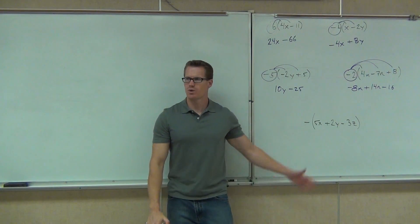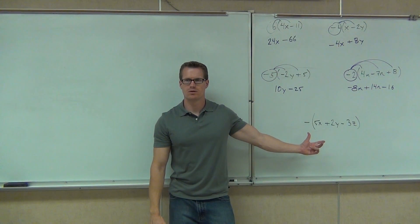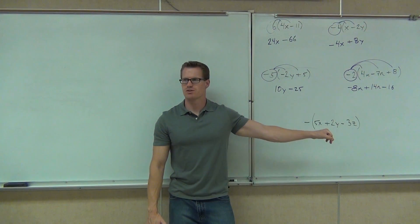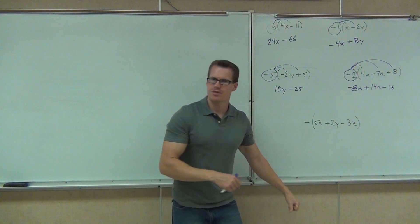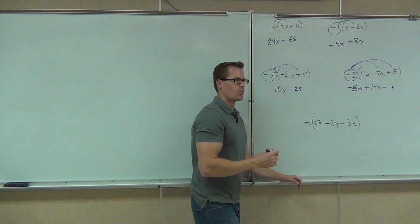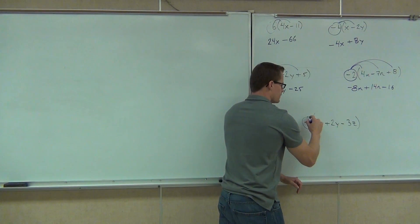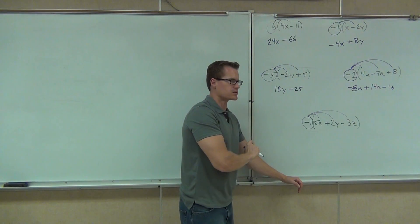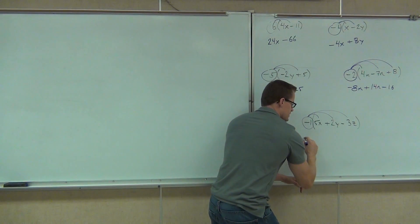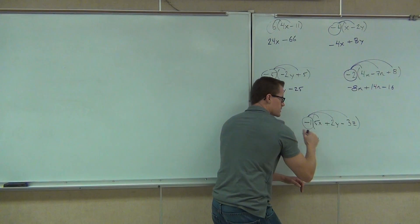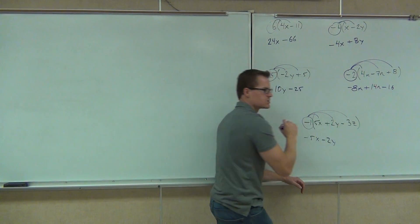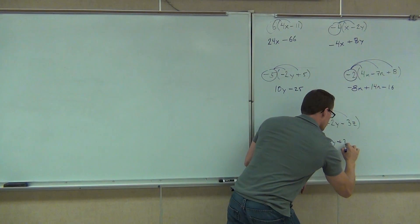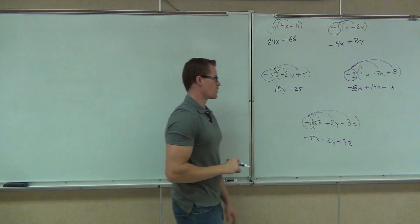How about the last one? Essentially, what happens on the last example? Put a 1 in — just change the signs. That's really all that's going to happen. That negative is going to change every sign inside. The way you can think about it — this really is like a negative 1. When you distribute negative 1, it doesn't change any of the numbers themselves, but it does change the signs. So negative 1 times 5x is negative 5x; negative 1 times positive 2y is minus 2y; and negative 1 times negative 3z will be positive, plus 3z.